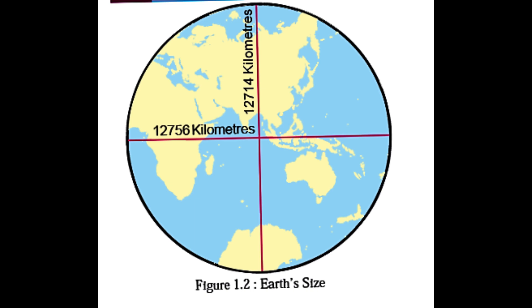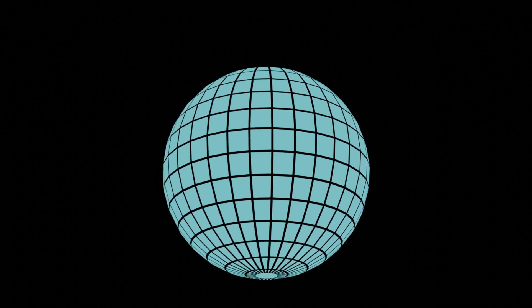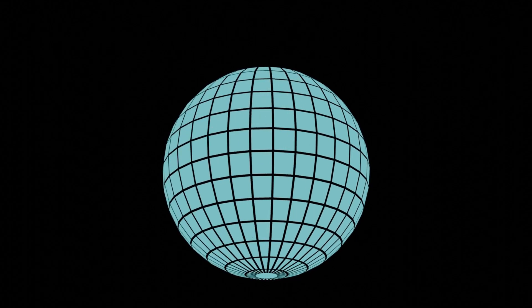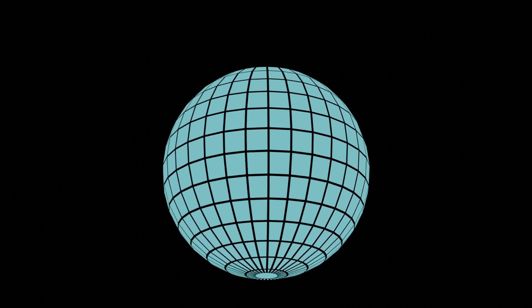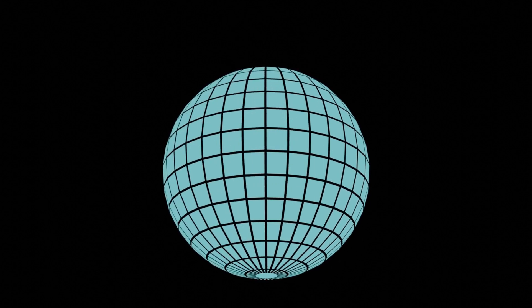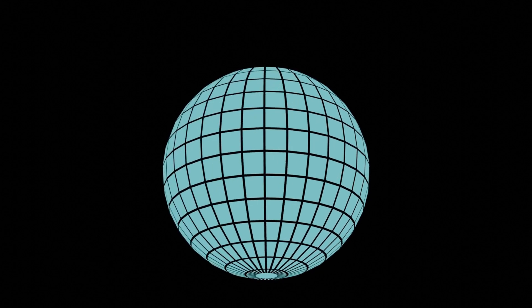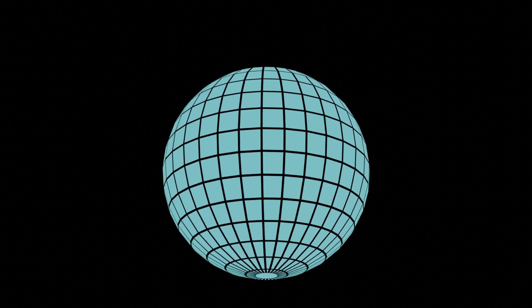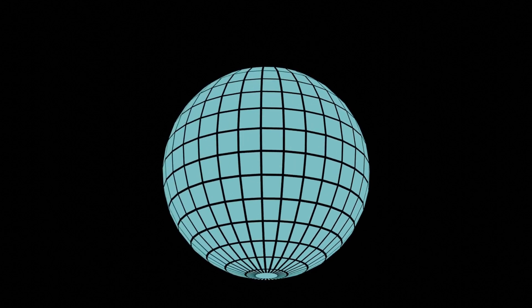Actually, there are no lines on the earth and it is impossible to draw on it. To solve this problem, geographers developed a small model of the earth called a globe. Globes help us to determine location on the earth. The lines we see on the globe are imaginary lines on the earth.